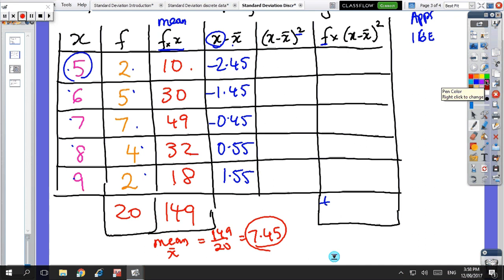And then on the next column, we have to square those numbers. So 2.45 squared, we've got 6.0025. So I'm putting all the decimal places in, you don't have to. So I've got 2.1025. I'll just do the next one, so 0.45 times 0.0025, and the last one, 2.4025.